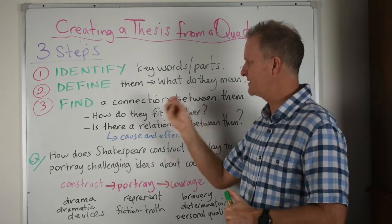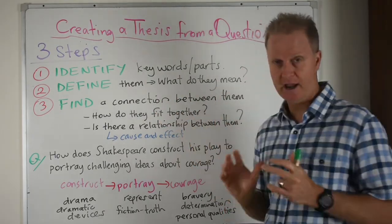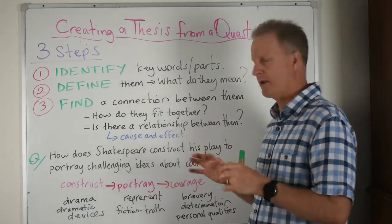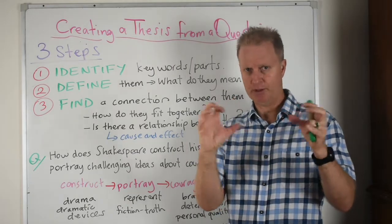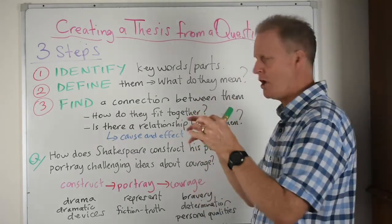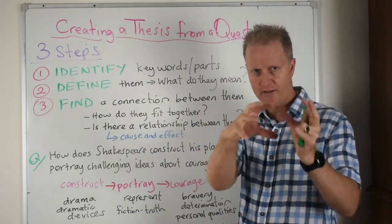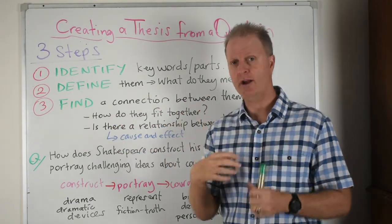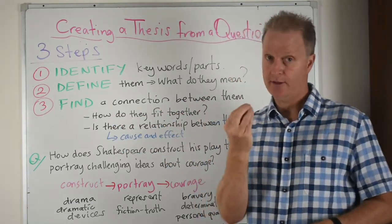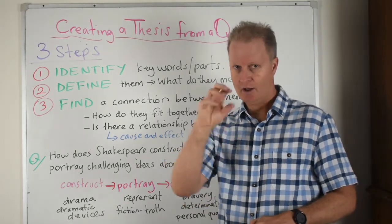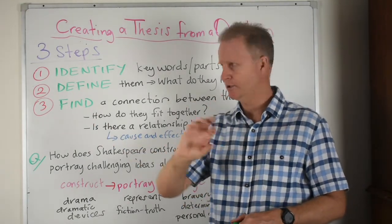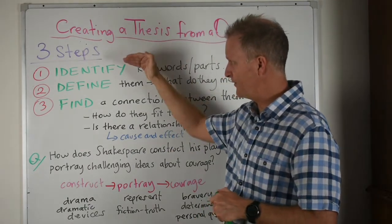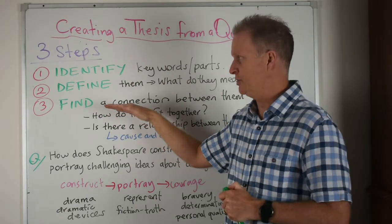Then the third thing you're going to do is find — try and find a connection between these words. How do they fit together? Is there a relationship between those words? There might be a cause and effect, so one thing might lead to the other. Quite often in questions, they are written in that sense that one part of the question is going to lead to the second part. So the three steps are to identify, to define, and then find that relationship.